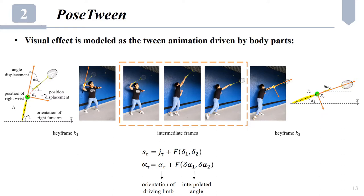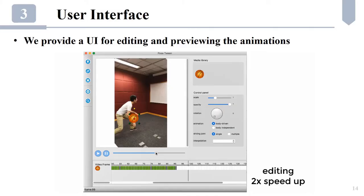Besides position, we also allow the orientation of a virtual element driven by the orientation of a limb, like this racket driven by the right forearm. The angle displacement of the racket in the local frame allows it to be not strictly aligned with the right forearm to avoid rigid-looking effects.